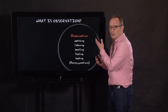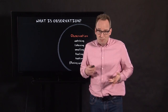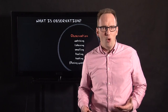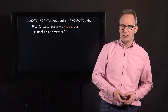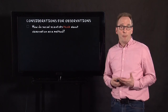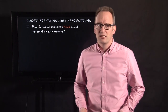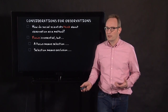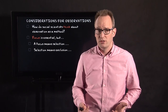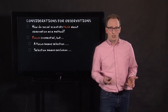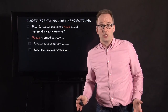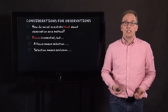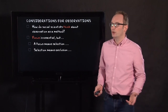Observation consists of using your senses, but we need more views and more thought about it. In the next few lectures I'll be discussing considerations for observation — for instance, how do social scientists think about observation as a method? Is it just using your senses, or is it more than that? A second consideration is focus, which is essential because focus means selection, and selection means exclusion — and that might be an issue, a difficulty, a problem.